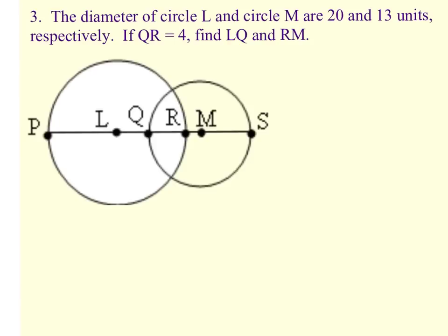Number three, we are given the diameter of circle L and circle M are 20 and 13 units respectively. What that means is that the diameter of circle L, so PR, is 20. And the diameter of circle M, which is QS, is 13.